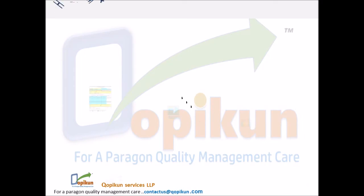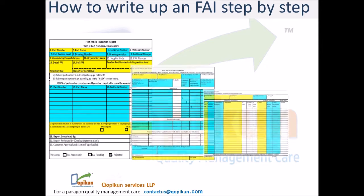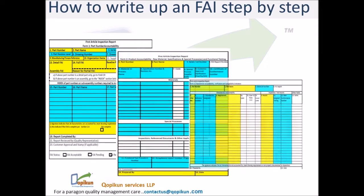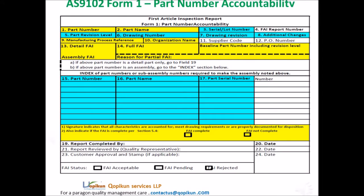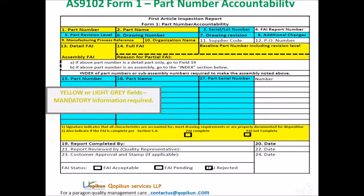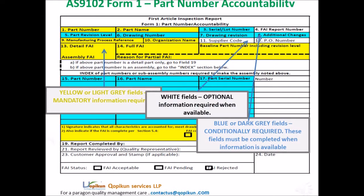How to write up an FAI step by step: Form 1, Form 2, Form 3. AS9102 Form 1 — Part Number Accountability. Yellow or light grey fields indicate mandatory information required. Blue or dark grey fields are conditionally required; these fields must be completed when information is available. White fields indicate optional information required when available.